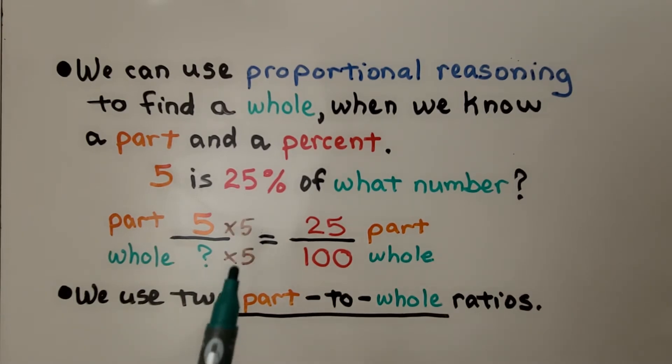We find the multiplication factor. 5 times 5 is 25, so this number times 5 is 100. And that would be 20. So we know 5 is 25% of 20.